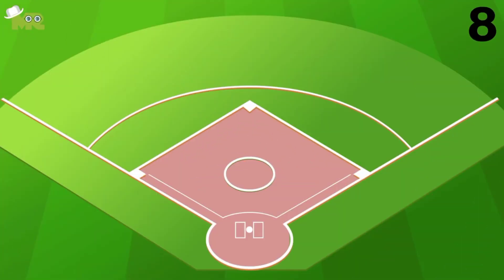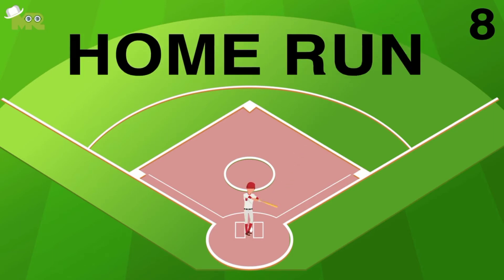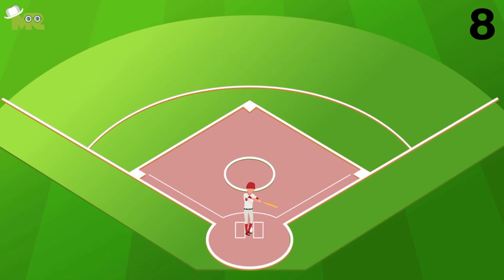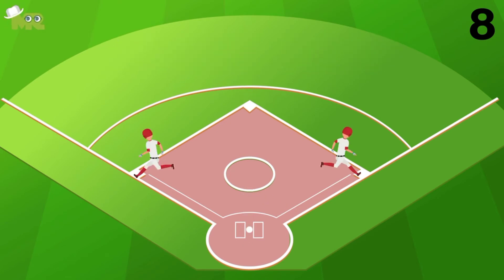Rule 8: If the batter hits the ball over the outfield wall and into the dead ball area, a home run is scored. The batter can run around the bases to score, along with any additional batters that have made it on base.